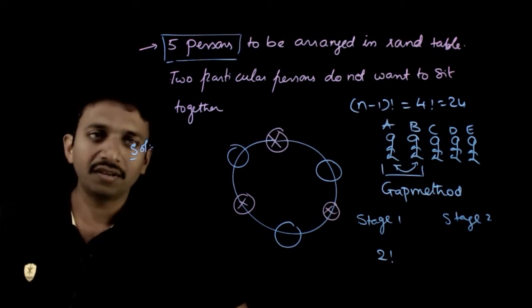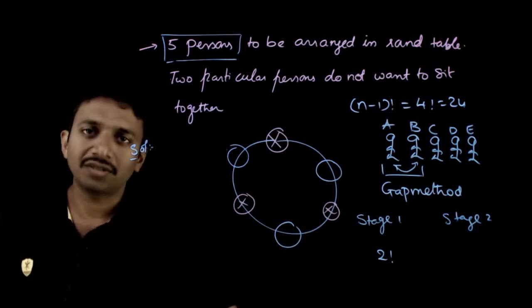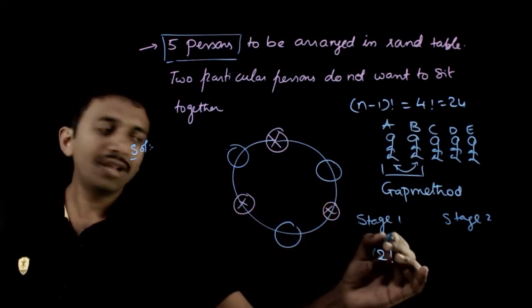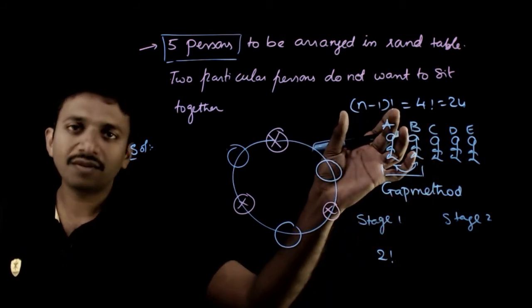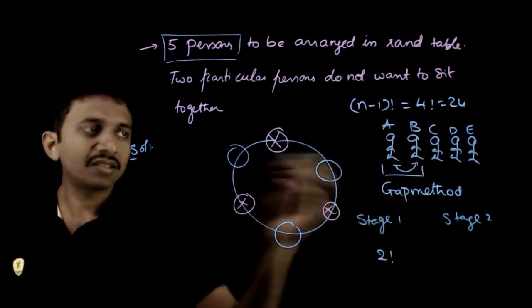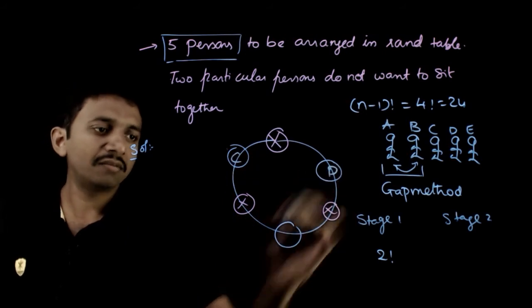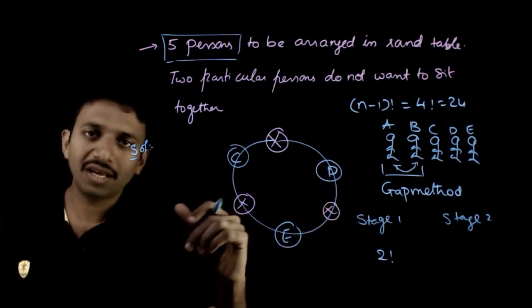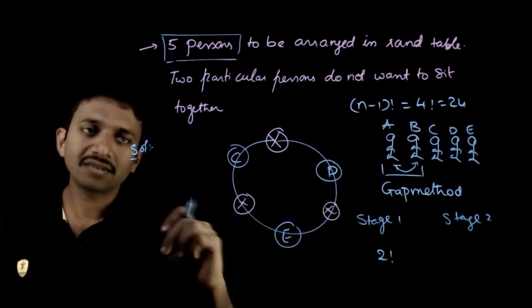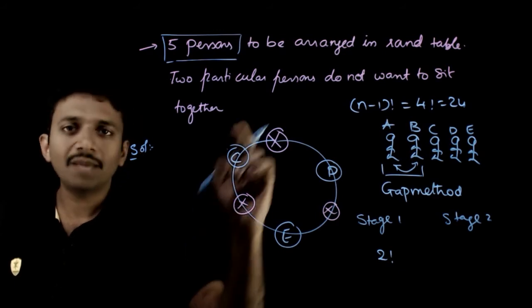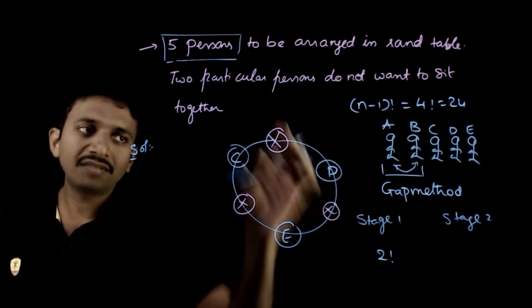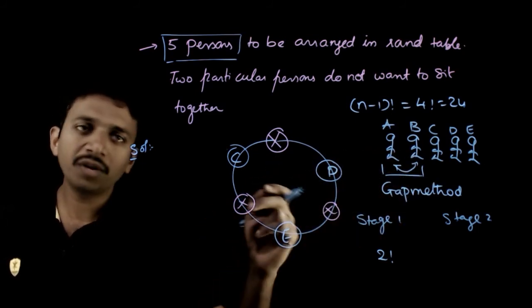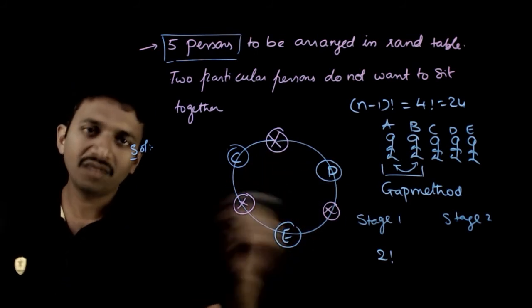So in these three gaps, how many ways can we arrange A and B? You know that if you have a round table, only in the first stage you will have n minus one factorial. Once these three are arranged, once you get a reference, the rest is the same as linear permutations. So you have three places and two persons. If you place A and B anywhere in these three places, they won't be together - there will be at least someone between A and B.